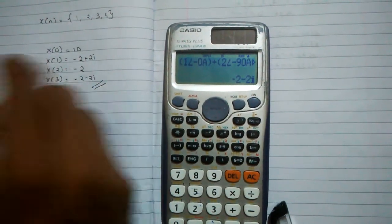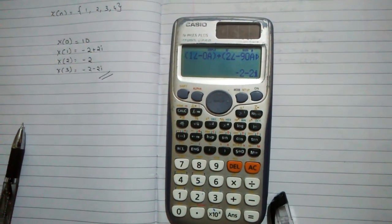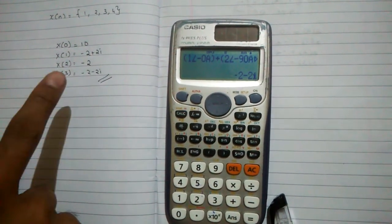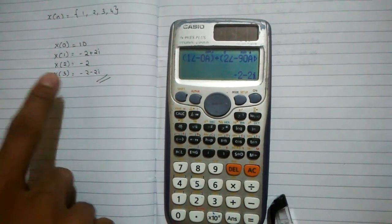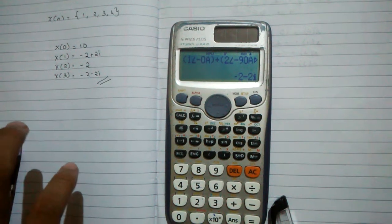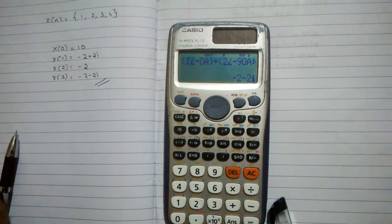This is how you find a 4 point DFT of any given question using calculator. You can verify the result using manual calculation. This thing hardly takes a minute, so it's really helpful in examinations to verify your answer.